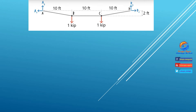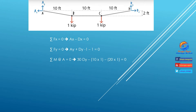We have 3 equilibrium equations. Summation of FX equals 0 leads to AX minus DX equals 0. Summation of FY equals 0 leads to AY plus DY minus 1 minus 1 equals 0. Summation of moment about joint A equals 0 leads to 30 times DY minus 10 times 1 minus 20 times 1 equals 0, where DY creates a counter-clockwise moment and the 1 kip forces create clockwise moments.